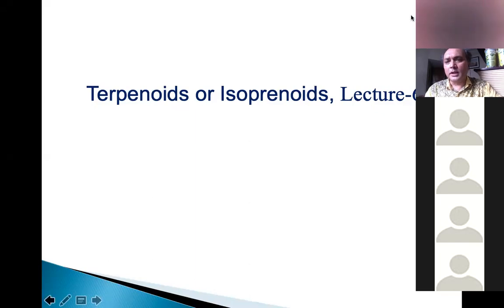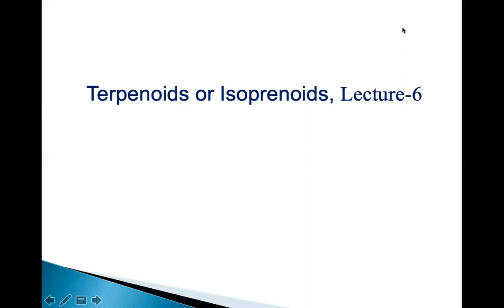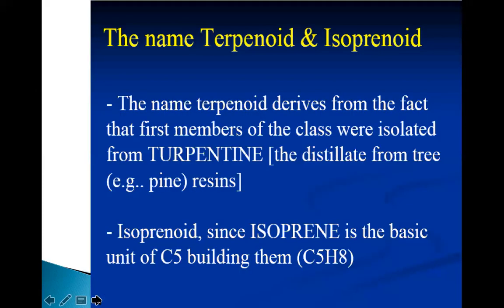Good morning. We shall start our lecture today. We shall discuss Terpenoids or Isopreneoids — this is Lecture 6 of your course BTL 530. Terpenoids are the largest group of secondary metabolites produced by different organisms including plants. The name Terpenoids or Isopreneoids comes from the first discovery of a natural product, Turpentine, from the distillate of a tree resin, and it is the first member of the class of Terpenoids.